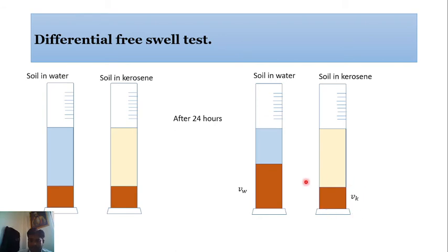So we can calculate the free swell index by the formula: volume of the soil sample in water minus volume of soil sample in kerosene, divided by volume of soil sample in kerosene.